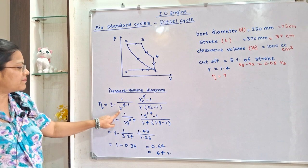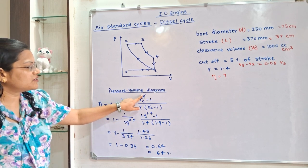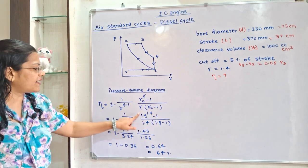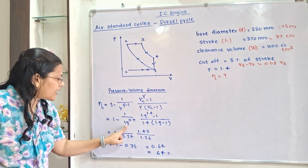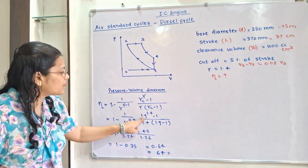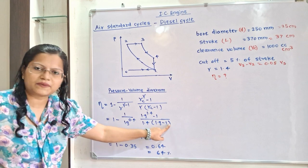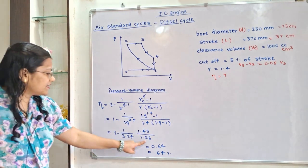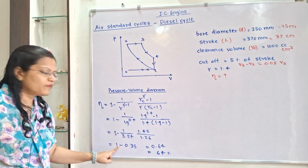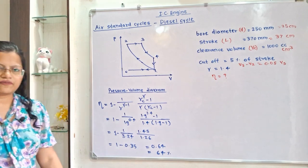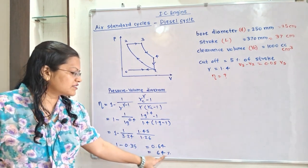Substituting the values: 1 minus 1 divided by 19 raised to 0.4, multiplied by (1.9 raised to 1.4 minus 1) divided by (1.4 × (1.9 minus 1)). Solving: 19^0.4 = 3.24, 1.9^1.4 − 1 = 1.45 − 1 = 0.45, and 0.9 × 1.4 = 1.26. The combined term evaluates to 0.35, giving efficiency = 1 − 0.35 = 0.64. Multiplying by 100, the efficiency is 64%.